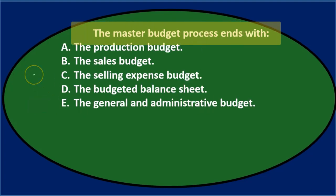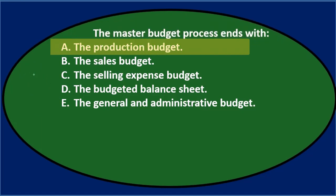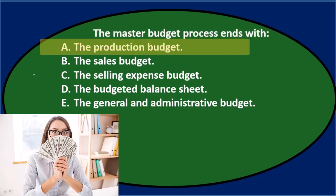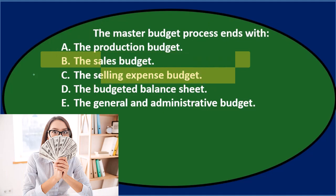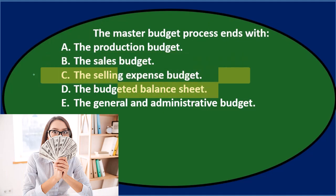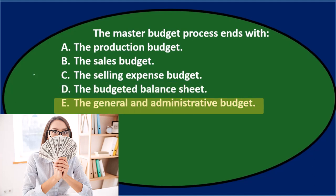Next question: The master budget process ends with — A. The production budget, B. The sales budget, C. The selling expense budget, D. The budgeted balance sheet, E. The general and administrative budget.